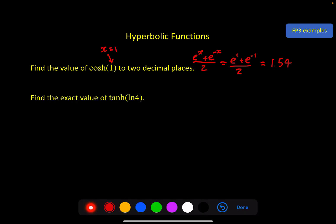Second one, find the exact value of TANH log 4. I don't know if this is obvious to you straight away, but the reason we can find the exact value here with the exponentials is because of this log. Remember when you've got an e to the natural log of something, the e and the natural log are effectively opposites and they kind of cancel out.